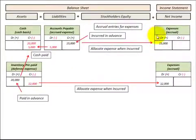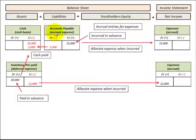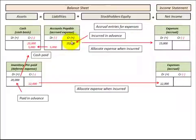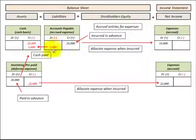Let's look at how we'd use accrual accounting to recognize expense on our income statement, either through a liabilities account or an asset account on the balance sheet. The liabilities account would be accounts payable or accrued expense — this is where we incur an expense or purchase something on credit prior to making a payment. At the time we incur the expense, we credit or increase our accounts payable and debit or increase our expense account on the income statement. Then when we make a payment on accounts payable, we debit or decrease accounts payable and credit or reduce our cash.